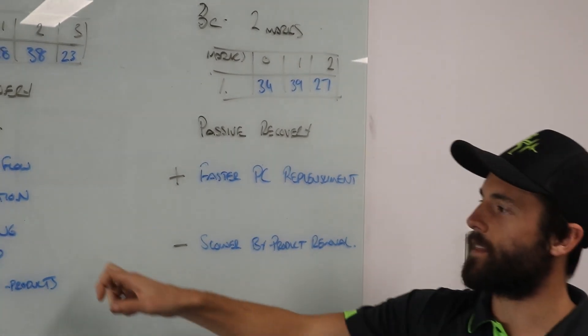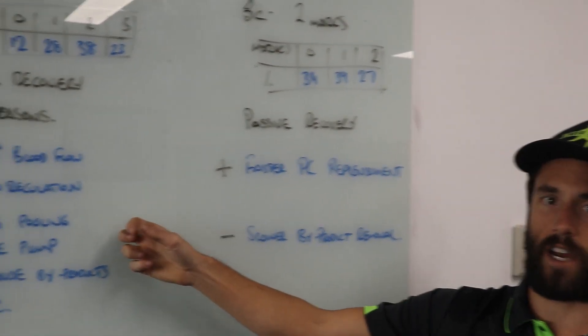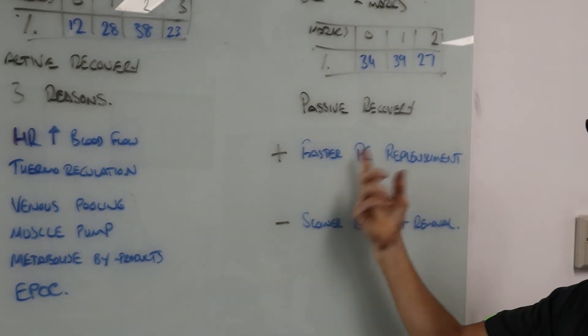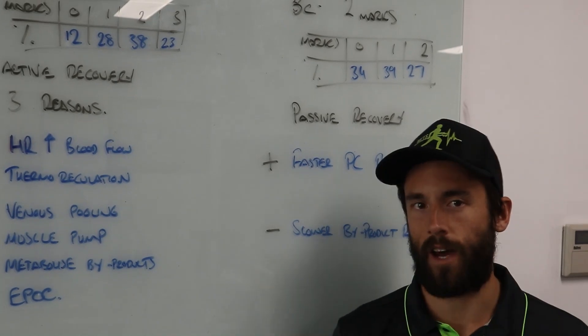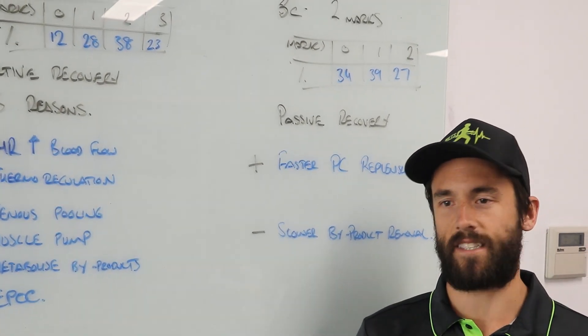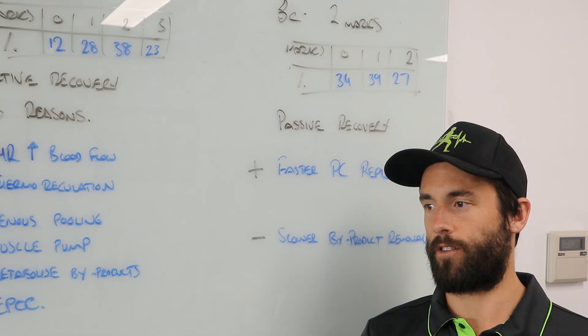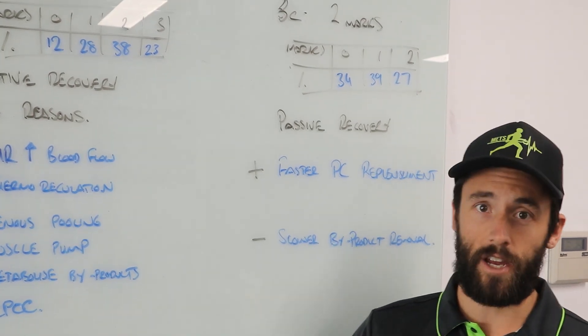Metabolizing byproducts, so we need oxygen available to clear out those the accumulation metabolic byproducts we spoke about, the lactic acid, the hydrogen ions and the lactate. We need oxygen to clear those out of the bloodstream, so we want that.